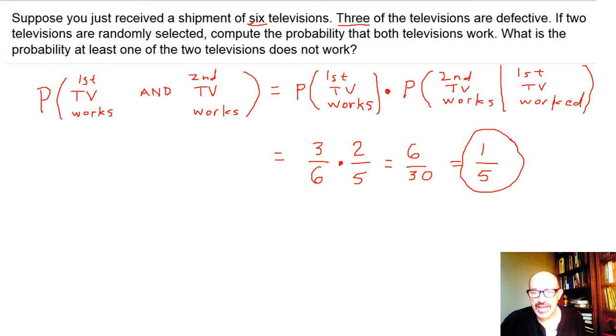Well, we found that in part A, one-fifth. So one minus that is one minus one-fifth, which is four-fifths. So four-fifths is the probability that at least one of the two televisions does not work. Thank you.